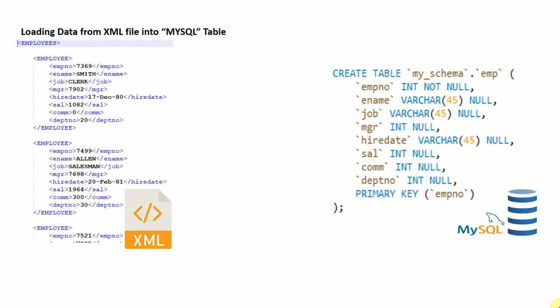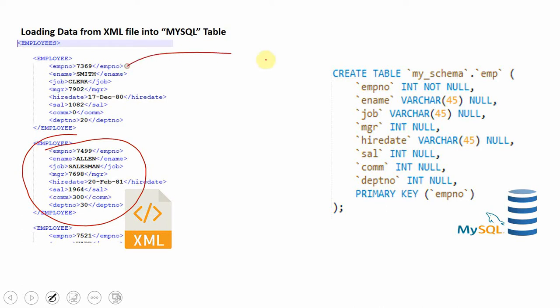Make sure that the data you're going to load from the XML file is compatible with the table — that means make sure the number of columns and the data type of each column matches the data we are going to load. For example, in this case I'm going to load employee information into a table called 'emp' present in my schema. I have employee information like a number in a data type.